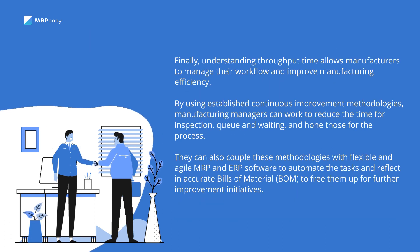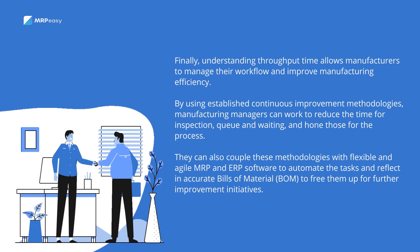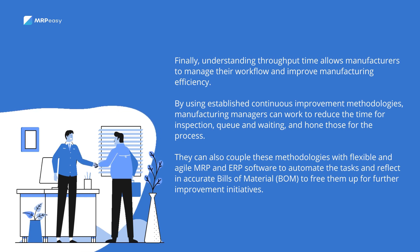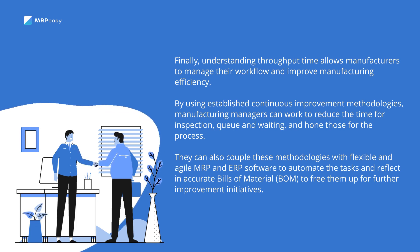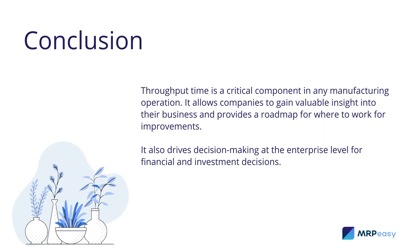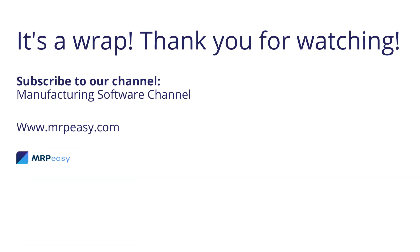Finally, understanding throughput time allows manufacturers to manage their workflow and improve manufacturing efficiency. By using established continuous improvement methodologies, manufacturing managers can work to reduce time for inspection, queue, and waiting, and hone those for process. They can also couple these methodologies with flexible and agile MRP and ERP software to automate tasks and reflect accurate bills of material, freeing them up for further improvement initiatives. Throughput time is a critical component in any manufacturing operation. It allows companies to gain valuable insight into their business, provides a roadmap for where to work for improvements, and drives decision-making at the enterprise level for financial and investment decisions.